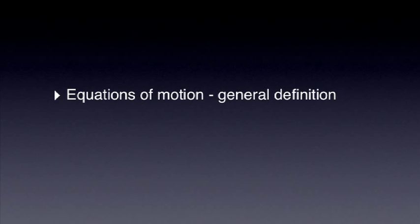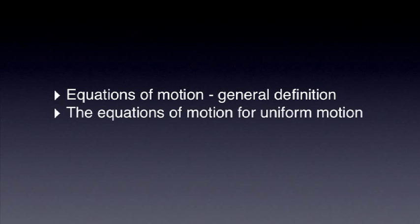Here is an outline of today's podcast. First, we define the term equation of motion. Then, we'll introduce the equations of motion for the simplest type of motion, uniform motion. And later, two worked examples will allow us to see how the equations of motion can be used to solve simple problems. Let's get started.